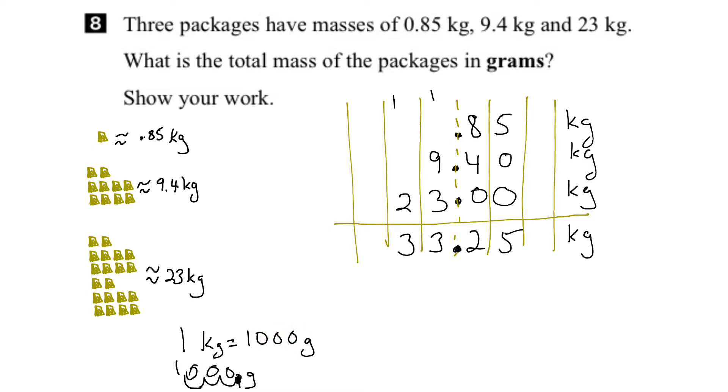So applying that reasoning to our solution here, we take this decimal and move it over 1, 2, 3 places. So the decimal would move from here to here, and the units would change from kilograms into grams.